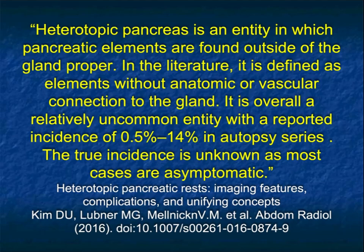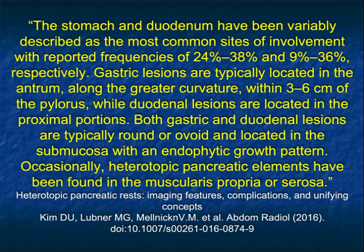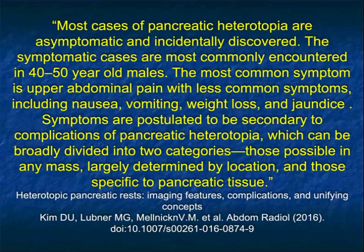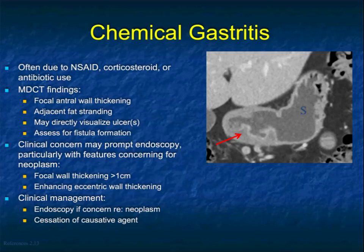Pancreatic tissue can be in the duodenum, can be in the stomach, and can simulate all sorts of polypoid lesions. It's often never thought about — only on biopsy is the diagnosis made. This article about heterotopic pancreas — an entity where pancreatic elements are found outside the gland proper — occurs in a very small percent of cases, and most patients are asymptomatic. The stomach and duodenum are the most frequent sites. Usually in the antrum by the greater curvature, within three to six centimeters of the pylorus. Most cases are asymptomatic and incidentally discovered — something to consider in the differential when seeing solitary masses in the antrum.